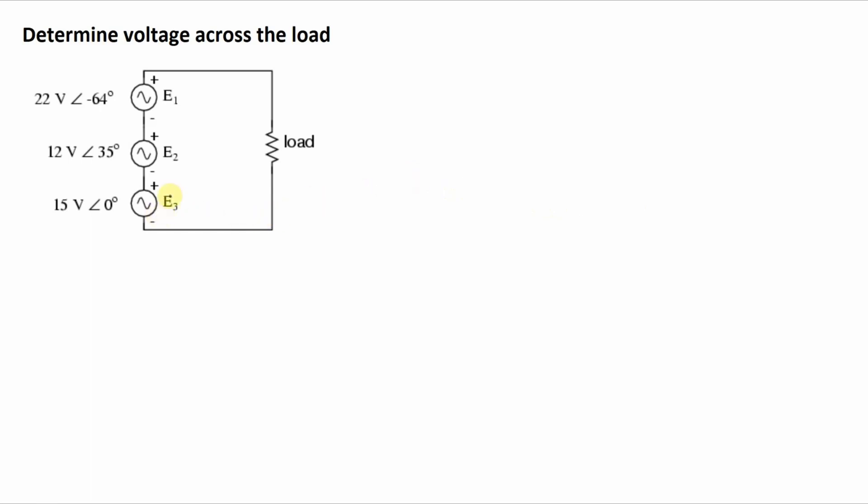And you can see I have three AC voltage sources written in their polar notation form. So I've got these three voltage phasers that I need to add together. One 15 volts with a phase angle of zero degrees, one at 12 volts with a phase angle of 35 degrees, and one at 22 volts with a phase angle of negative 64 degrees.